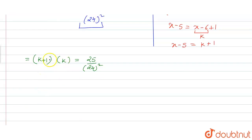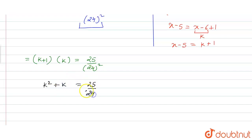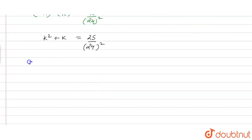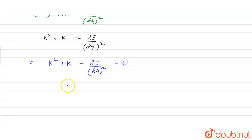Cross multiplying, we have k into k is k square, and k into 1 is plus k, equal to 25 upon 24 square. So it's a quadratic equation: k square plus k. Shifting this term to the LHS, we have k square plus k minus 25 upon 24 whole square is equal to zero.